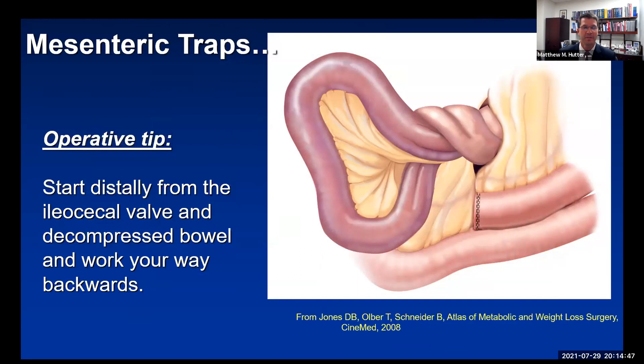Here's a Roux limb coming through a Peterson's defect. The key in these cases is to start distally: go to the ileocecal valve where the bowel is decompressed, follow that decompressed bowel proximally, and things become much clearer. Rather than wrestling immediately with the big ischemic mass and risking perforation, starting distally is the critical tip for managing mesenteric traps. When you reduce them, close them so they don't recur.